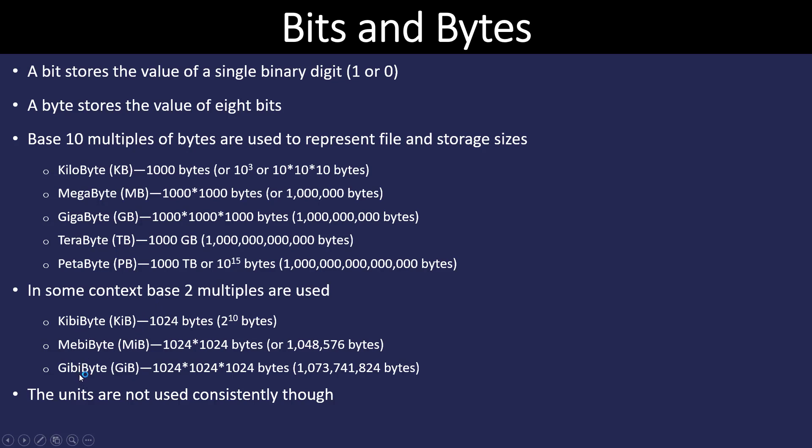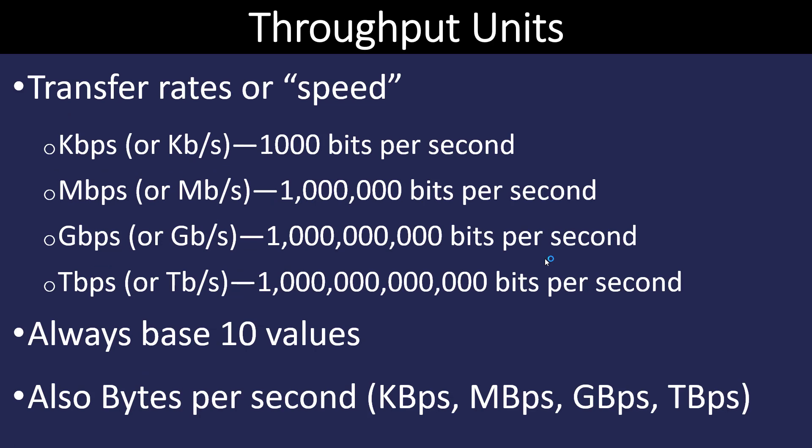We'll switch gears and look at transfer rates or speeds or throughput, and they're going to be represented with many of the same sounding units. Here we have kilobytes, which would be 1,000 bits per second, megabytes, a million bits, gigabytes, terabytes. These will always be base 10 and there's no crossover like we saw with storage. We're all looking to get gigabyte internet service at our house, right?